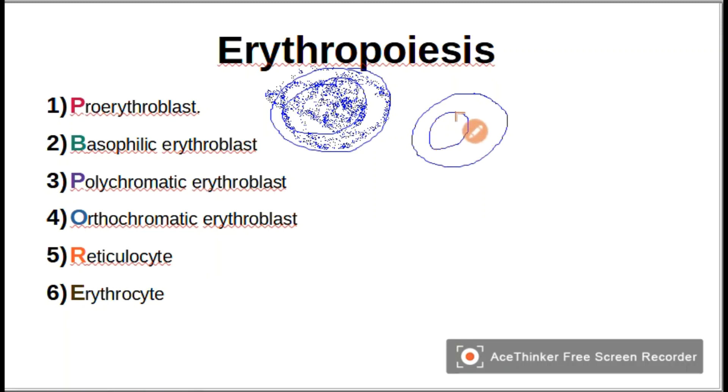The third one is polychromatic erythroblast. It stains poly, meaning two, and basophilic means it stains blue.